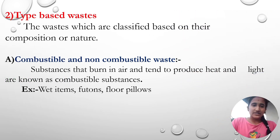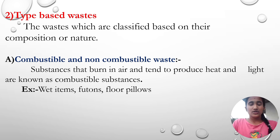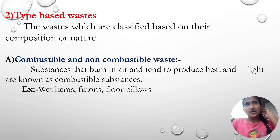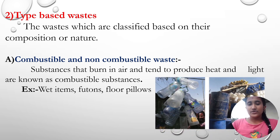Next is type-based waste. Type-based means waste which is classified based on its composition or nature — biodegradable, combustible — these are the natures of the waste. Firstly, combustible and non-combustible waste: substances that are burnt in air and tend to produce heat and light are known as combustible substances. Examples of combustible waste include futons, and similar materials. Here you can see some examples.